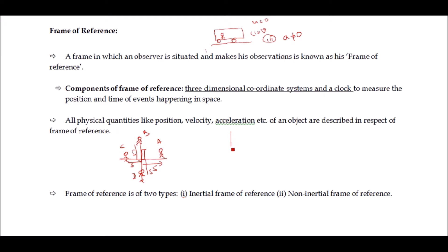For this, we consider a three-dimensional coordinate system — the x, y, and z coordinate system — along with a clock to measure the time of events happening in space. The intersection of all three coordinate axes is called the origin. All physical quantities like position, velocity, and acceleration of an object are described with respect to the frame of reference, which requires three coordinate axes and one clock.